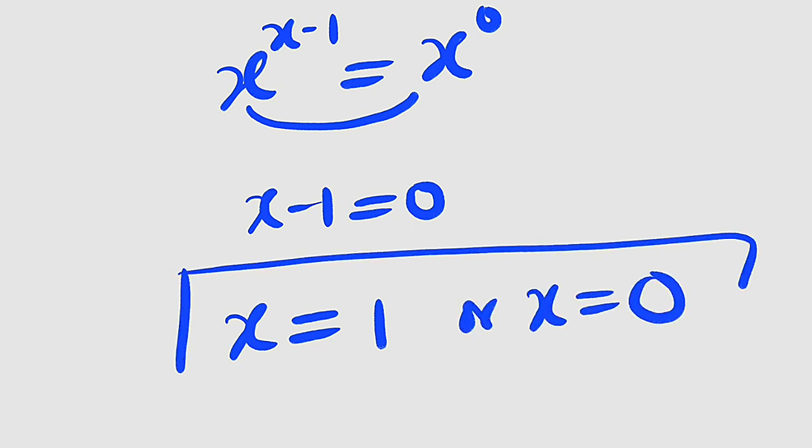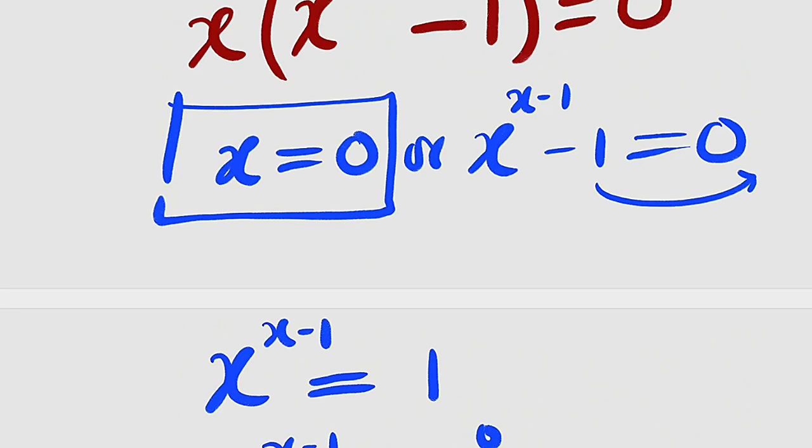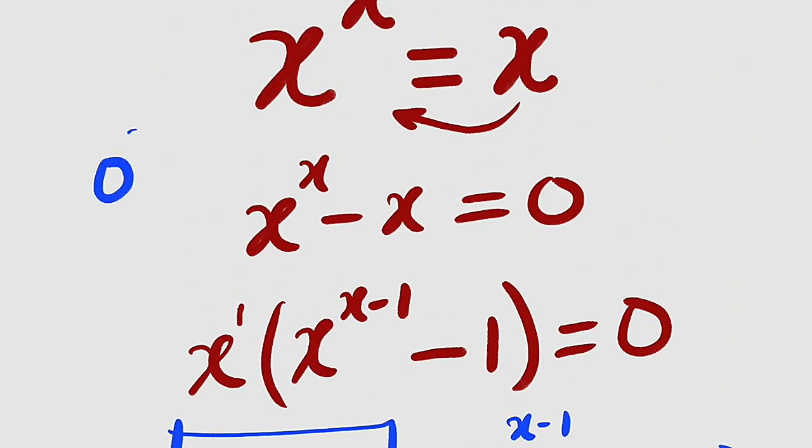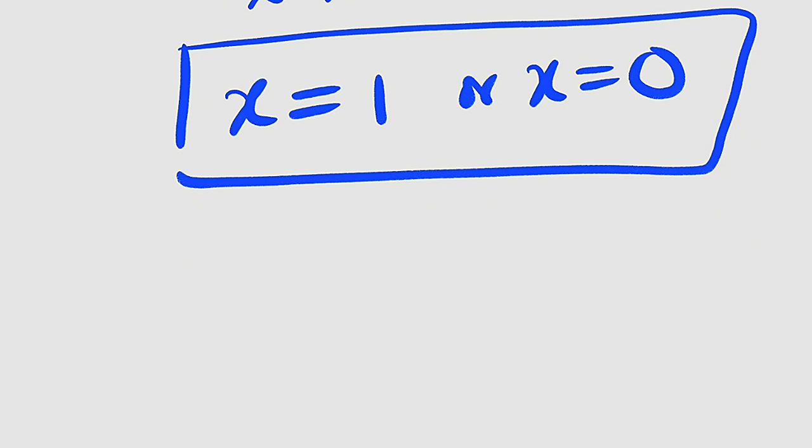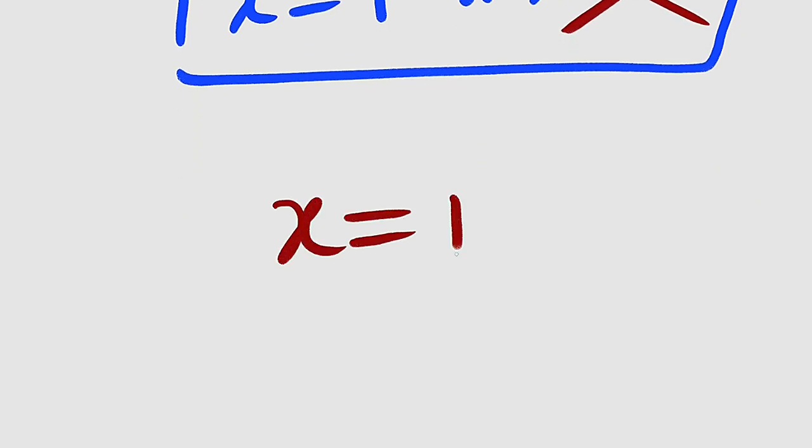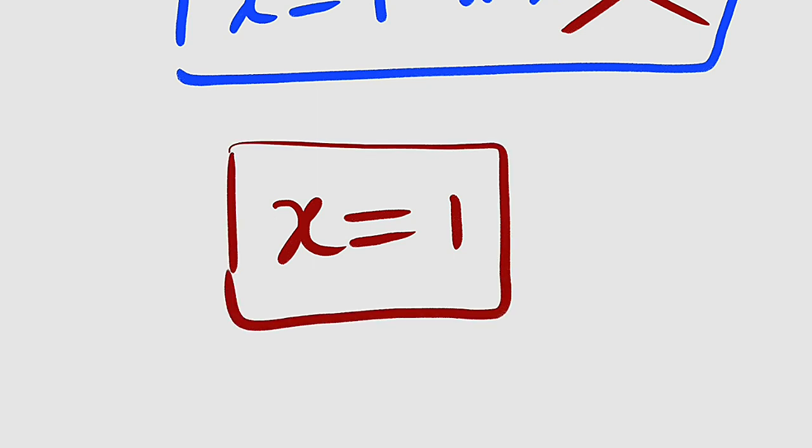But let us verify. Already we have seen that by checking 1 is a solution. But what about 0? If we have 0 to the power of 0, this is undefined. It doesn't make any sense. So therefore, we are not going to consider this as a solution. We are going to discard this solution and consider only x equal to 1 as a valid solution.